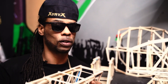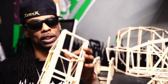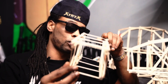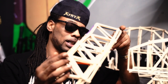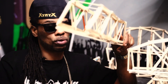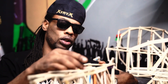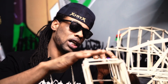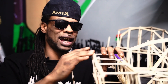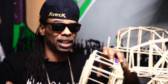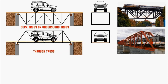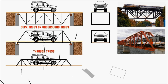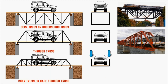Truss bridges are categorized by how they orient. If you can drive through it, that's a through truss bridge. If you can drive on top of it, that is a deck truss bridge. And if there's no ceiling — pretty much — that's a half-through bridge. Very simple.